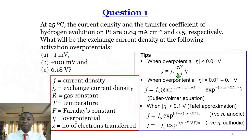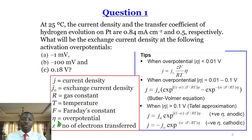The symbols in these equations stand for: J, the current density; J0, the exchange current density; R, the gas constant; T, temperature; F, Faraday's constant; eta, the overpotential; and Z, the number of electrons transferred.